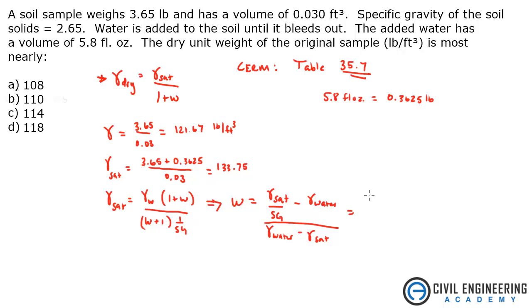And so we got gamma sat is 133.75 divided by 2.65, that was given, minus 62.4. Divide that by 62.4 minus 133.75. And what do you get? I get 0.17.